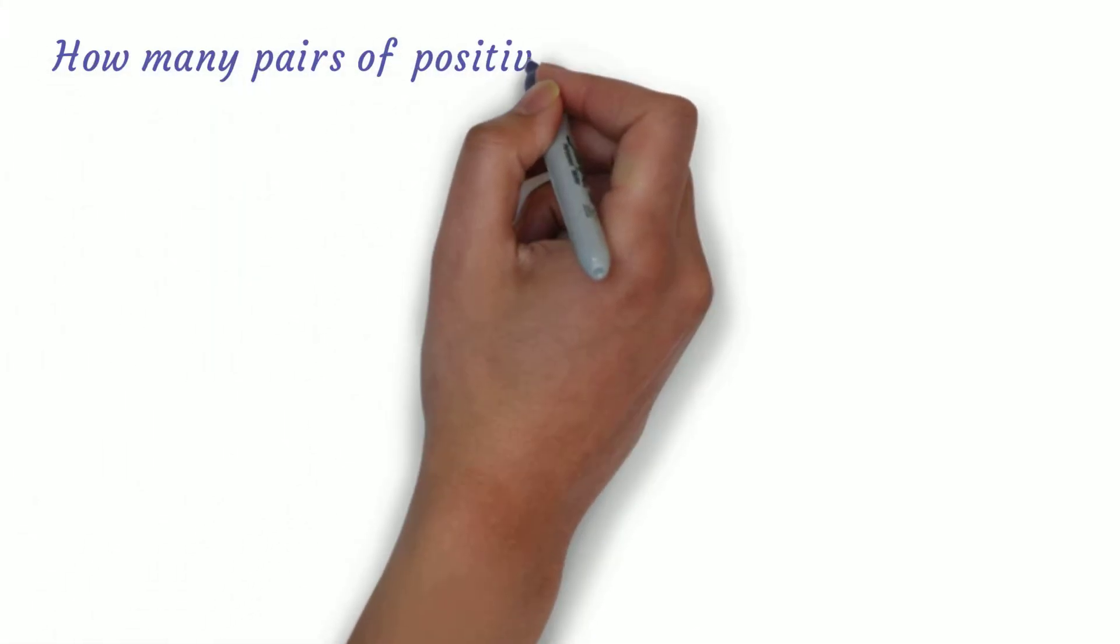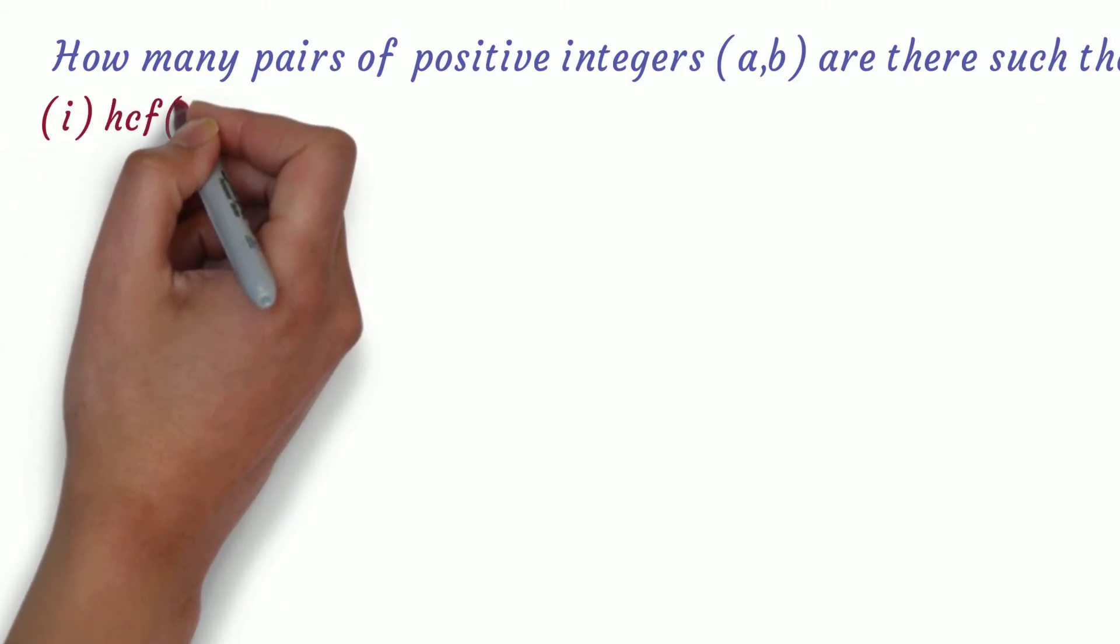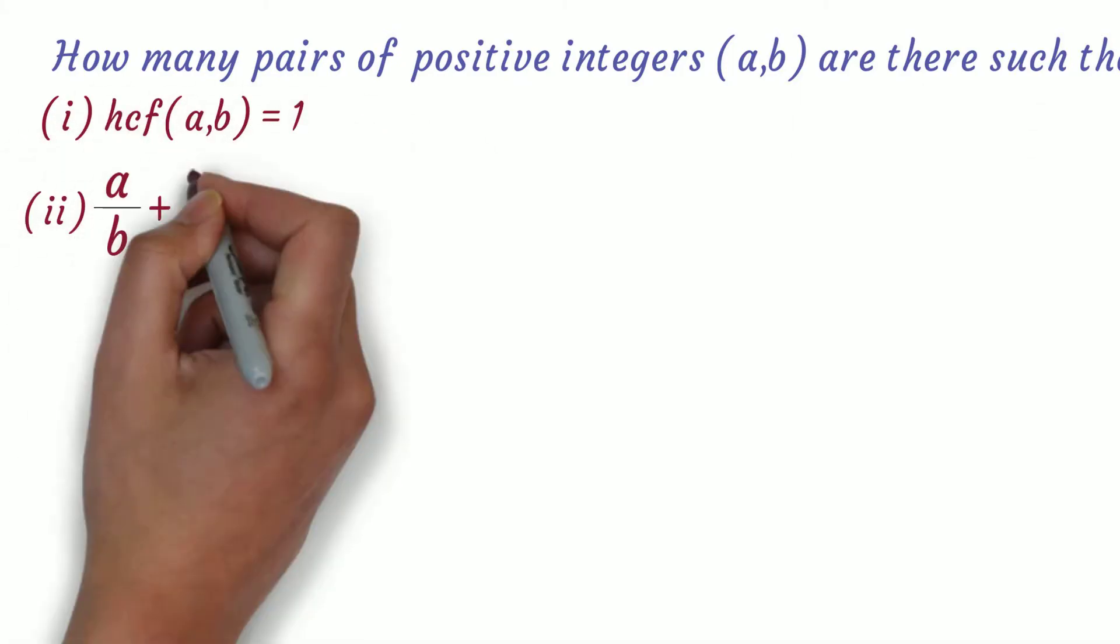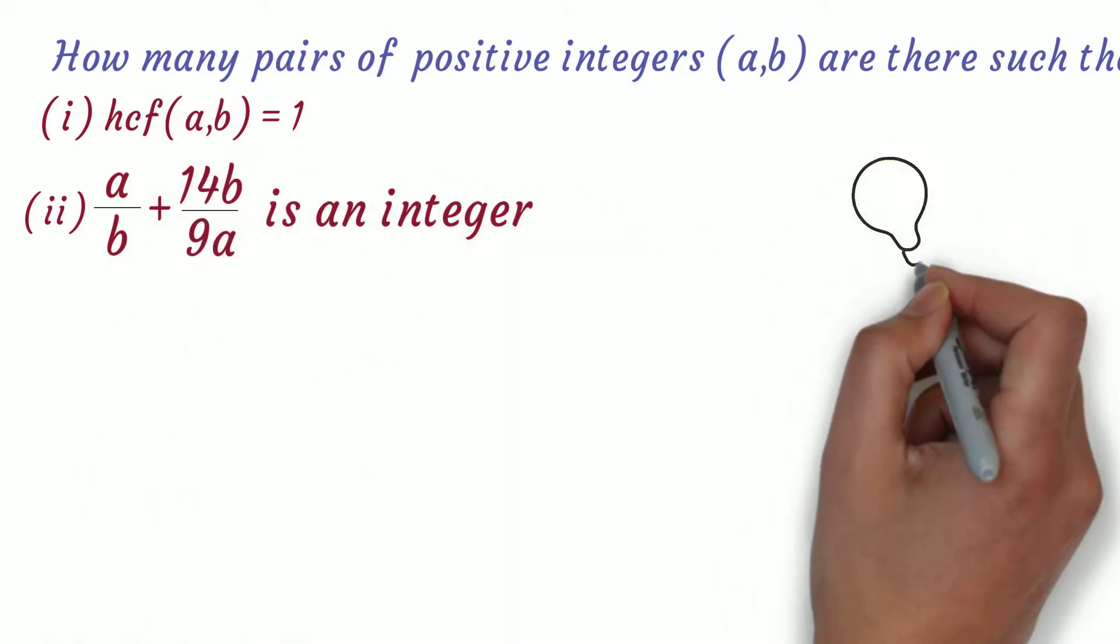How many pairs of positive integers (a,b) are there such that hcf(a,b) = 1 and a/b + 14b/(9a) is an integer? Let's get started.